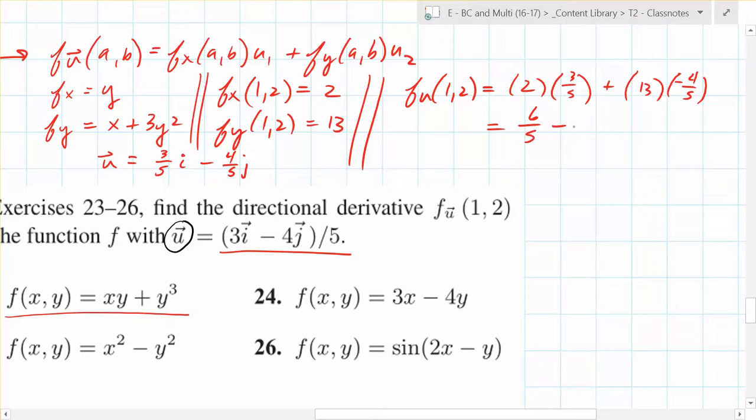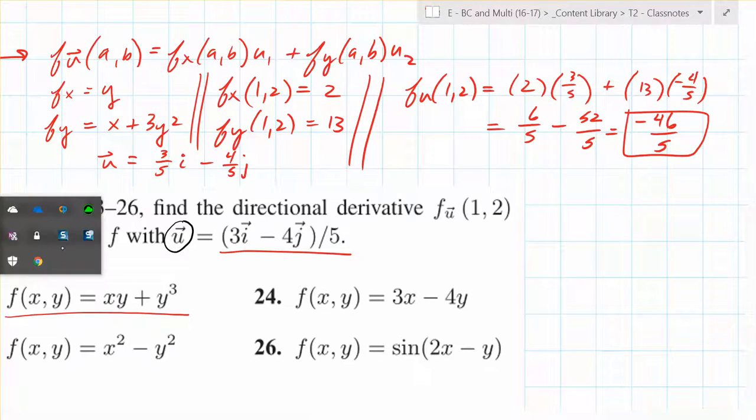That's what I ended up with. 6 over 5 minus what? Minus 52 over 5. So what's it going to be? Negative what? Come on, what is it going to be? Negative 46 over 5. Good job with the fractions. You guys are like, AAAH, STOP IT! Thought this was calculus, not...